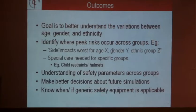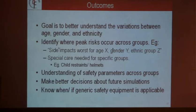Our goals are about understanding variation across the population — where the peak risks occur, particularly around specific groups. For instance, side impacts are quite risky for head trauma, so we need to understand which age, gender, and ethnic groups are most at risk and where special care is needed. We already have special helmets and restraints for kids, but we need to understand what's appropriate based on data, not just a rule of thumb. This work will allow better decisions around future simulations — we can do it for one subject and apply it across the population. It will also tell us whether generic safety equipment is appropriate; for example, in the mines everyone gets the same hardhat, and maybe that's not appropriate. That's what I'm going to try and find out.